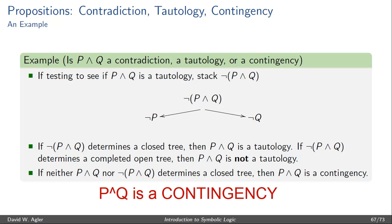Our two truth tree tests have shown that P ∧ Q is not a contradiction and it's not a tautology — therefore P ∧ Q is a contingency.